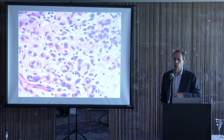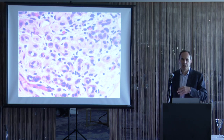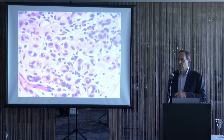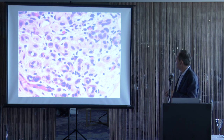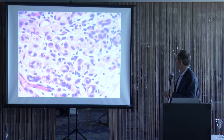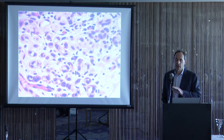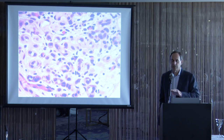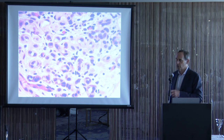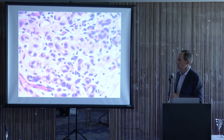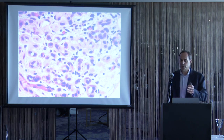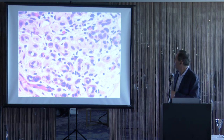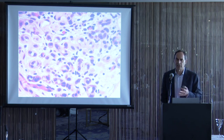A helpful clue for nephrogenic adenoma is the hyaline rim of collagen around some (not all) of the glands — a glassy basement membrane. This is not seen in clear cell adenocarcinoma. In the prostatic urethra, this glassy membrane also helps distinguish nephrogenic adenoma from prostate cancer, since prostate cancer never has that membrane. PAX8 immunostaining is also definitive — nephrogenic adenoma is PAX8-positive while prostate cancer is NKX3.1-positive/PAX8-negative.